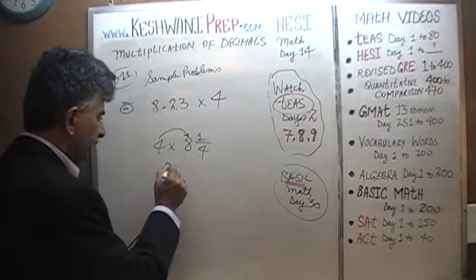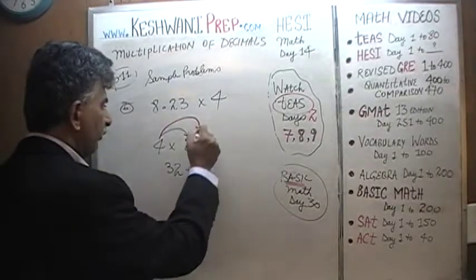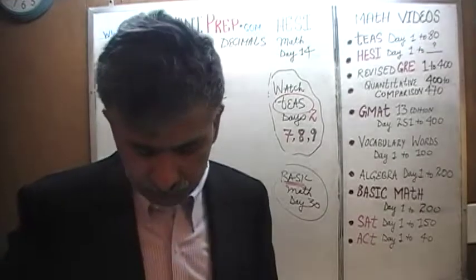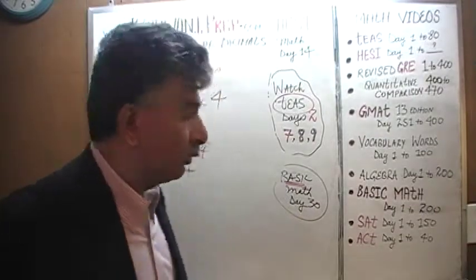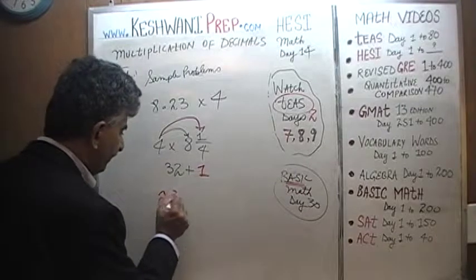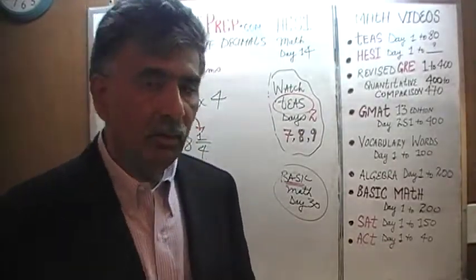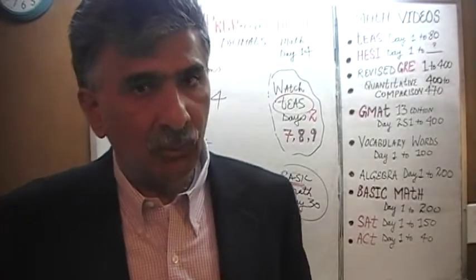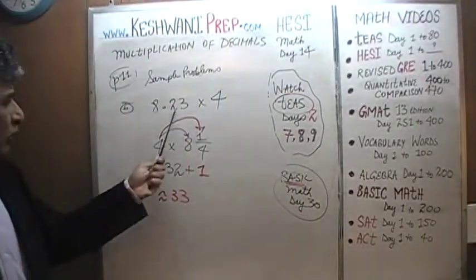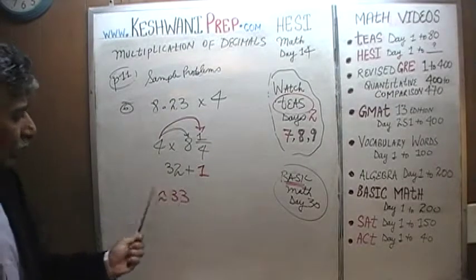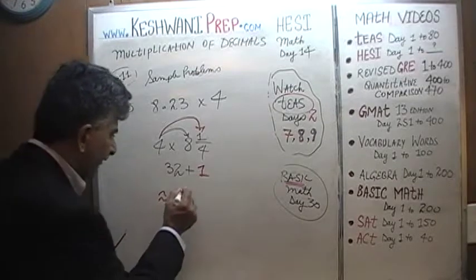We know 4 times 8 is 32. Then 4 times a quarter: if you have 4 quarters, think of the money — 4 quarters make a dollar, that's 1. So 32 plus 1 gives us approximately 33. Now we ask: is that 33 an overestimation or an underestimation? We are pretending 8.23 is 8.25 — obviously we are overestimating. So 33 is an overestimate, meaning the correct answer has to be slightly under 33.